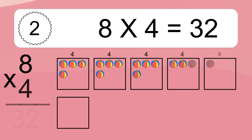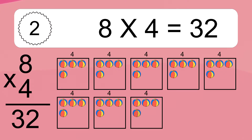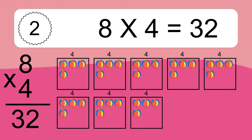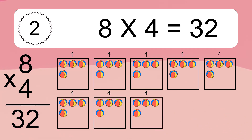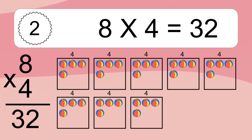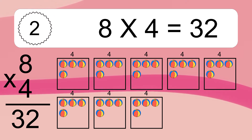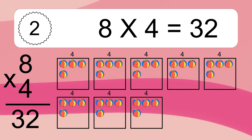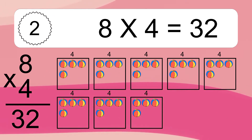8 times 4 equals 32. We have 8 boxes, and each box has 4 colorful balls inside. If you count all the balls in all the boxes together, you will have 8 times 4 balls. This equals 32 balls.